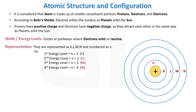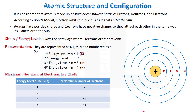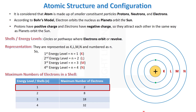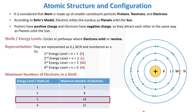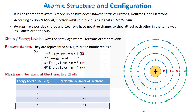The maximum number of electrons the first energy level can accommodate is two. The second can hold eight electrons, the third holds eighteen, and the fourth can hold 32 electrons. The shell closest to the nucleus has less energy compared to shells farther away. The greater the number of electrons in a shell, the greater the energy of that shell.